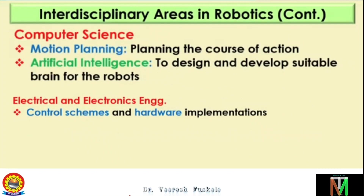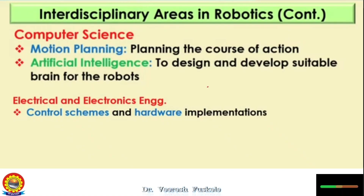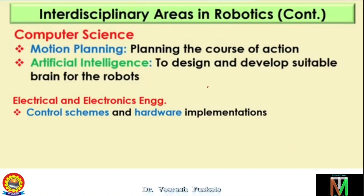The next very important module is computer science, which nowadays plays a very important role because we want to make our robot intelligent. We need to do programming and make decisions. In computer science, we deal with motion planning — the course of action for the motion of the robot arm or end effector. How the end effector will be moving is determined by motion planning algorithms.